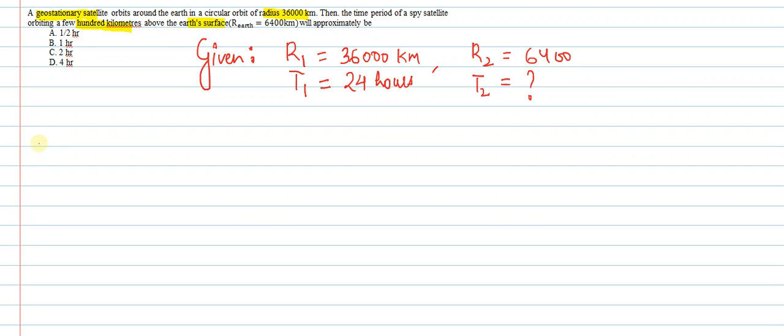To solve this, we'll use Kepler's law: T₂/T₁ = (R₂/R₁)^(3/2). So T₂ = T₁ × (R₂/R₁)^(3/2).